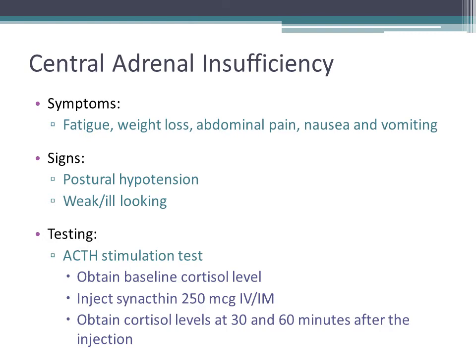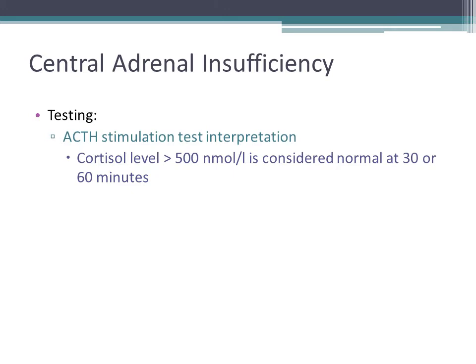In a normal person, you would see a rise in cortisol at 30 and 60 minutes. The normal level is more than 500 nanomoles per liter at either time point. If the patient does not mount a cortisol response above 500, this is considered abnormal and the patient can be labeled as adrenally insufficient, with some exceptions we will not cover at this stage.